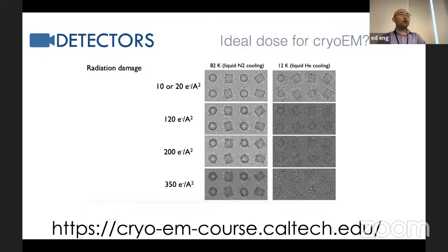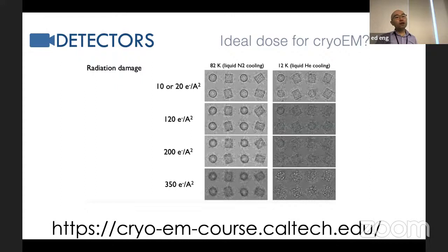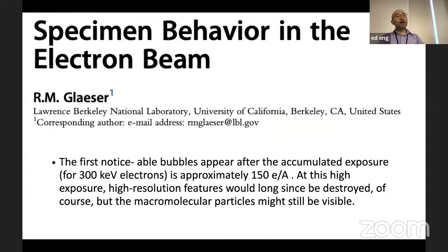At liquid nitrogen or liquid helium temperatures, as you send electrons down and hit samples, with increasing dose you get more signal but also destruction of your sample. During the round table we can talk about what an ideal dose for EM may be. Some say you can get into the tens of electrons per square angstrom, others say 200, and you can data-process it later. Bob Glazer has also looked at this — the slides will be posted online.